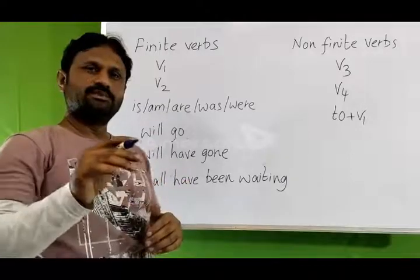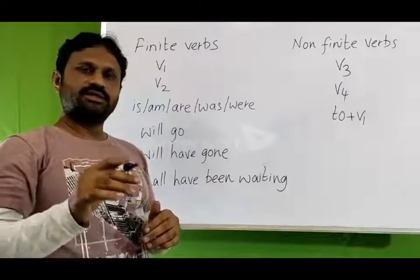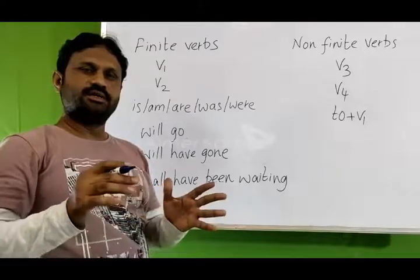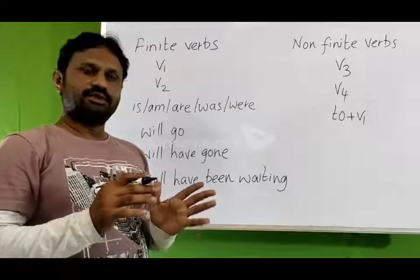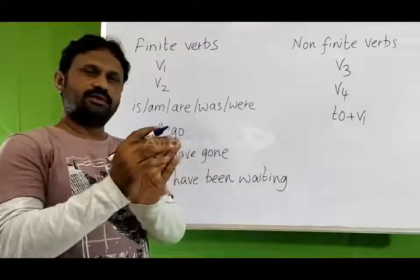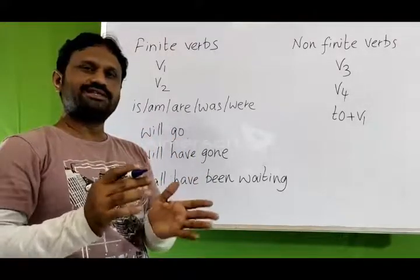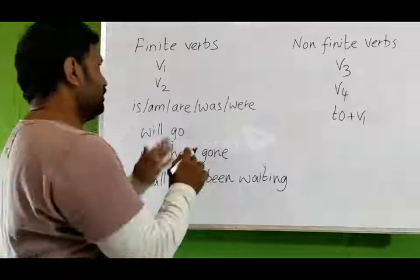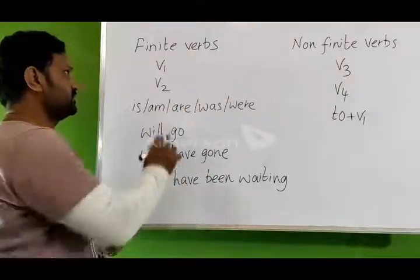For example: 'I saw him go,' 'I saw him write.' These are the special forms where the main verb stands last. This is the exception. Remaining, all the V1 forms are finite verbs.